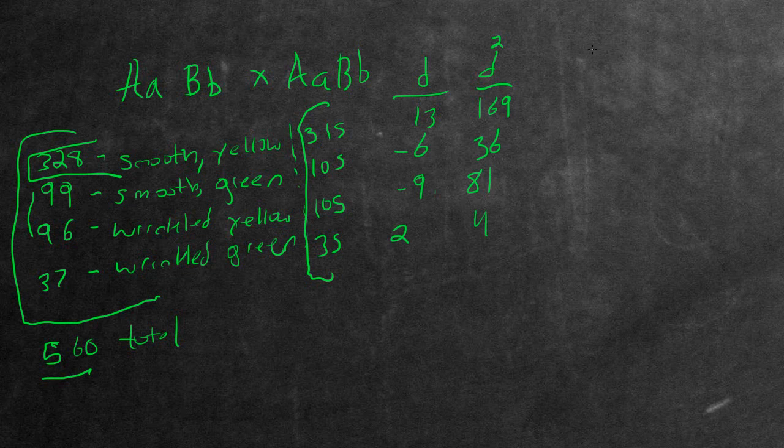Now the next thing you want to do is take the D value that you calculated and divide it by the expected amount of progeny. So in this particular case, we're going to be doing 169 divided by how much we expected. We expected 315. And you're just going to do it for all of the ones down here. So for 36, you're going to divide it by 105.